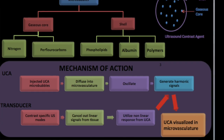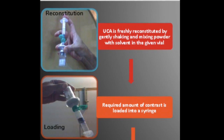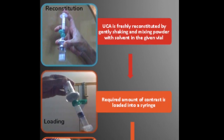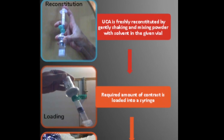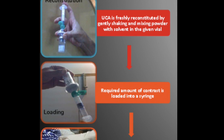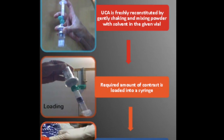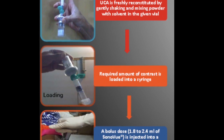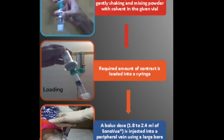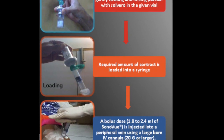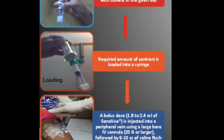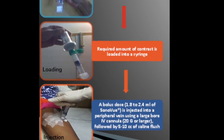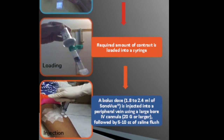To prepare the contrast agent, the agent arrives in a vial in powdery form, supplied with a plunger containing saline. We instill the saline into the powder and reconstitute the contrast agent by shaking and mixing. Then we load the required amount into a syringe and inject it using a 20-gauge or larger needle, followed by a 5 to 10 cc saline flush. It is important not to use a smaller needle as the microbubbles may rupture. For liver studies, we typically use a dose of around 1.8 to 2.4 cc of contrast, followed by a 5 to 10 cc saline flush.